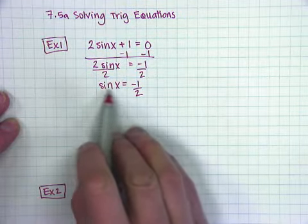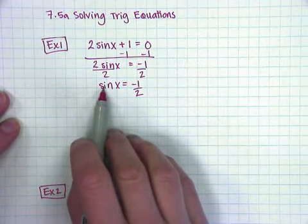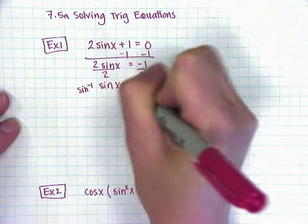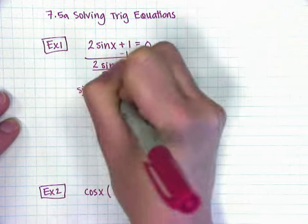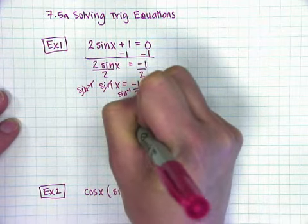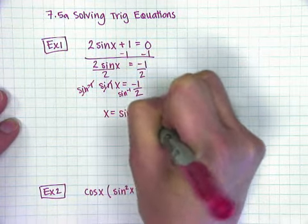And now, to get x by itself, I need to get rid of this sine, and the way that I cancel out a sine function is with its inverse. So I'm going to take the sine inverse of both sides, that's going to cancel out the sine, and I get x equals the sine inverse of a half.